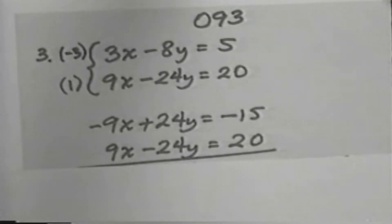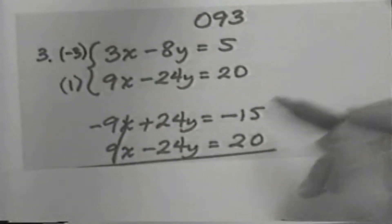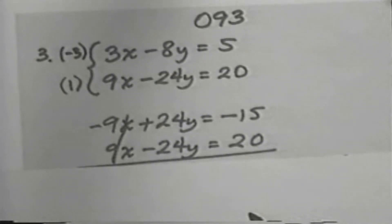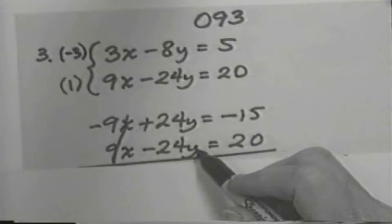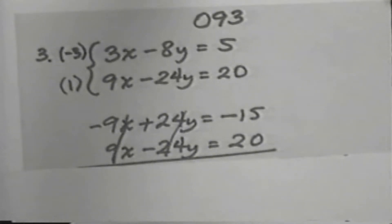We've set it up so that the negative 9x and 9x will cancel. That is, add up to 0. And then we add 24y and negative 24y, but wait a minute, 24y and negative 24y also cancel. That is, they add up to 0.